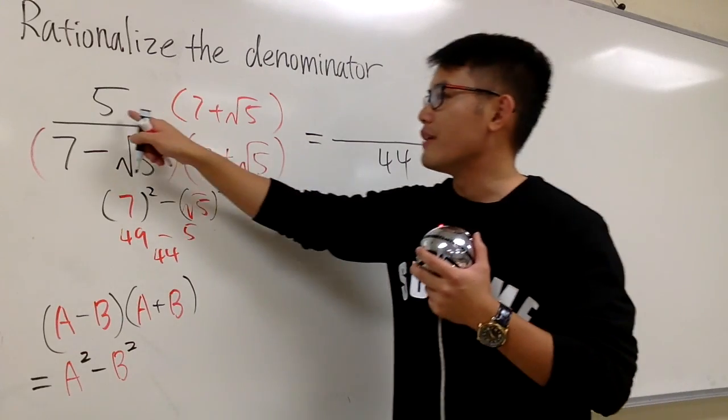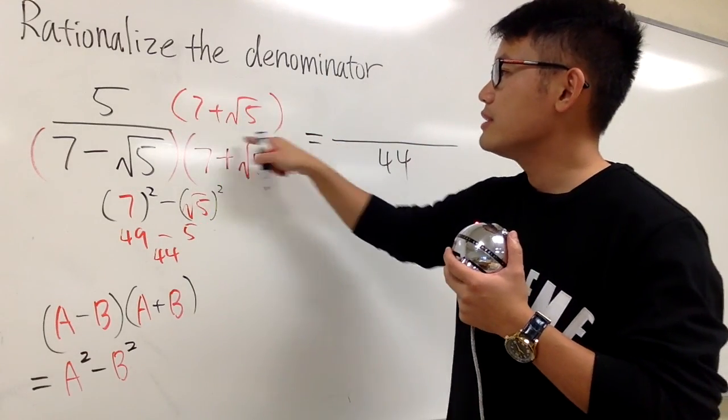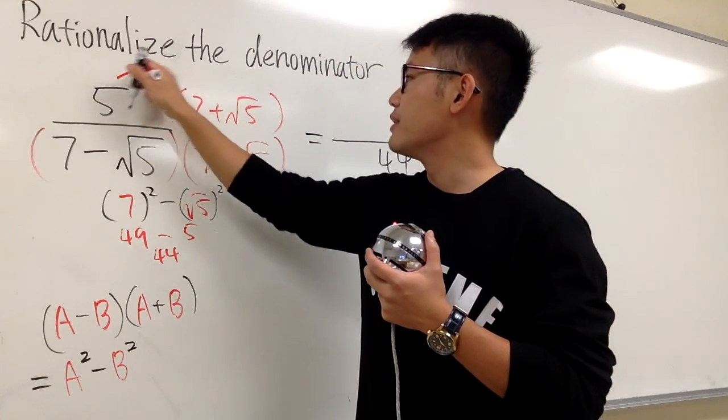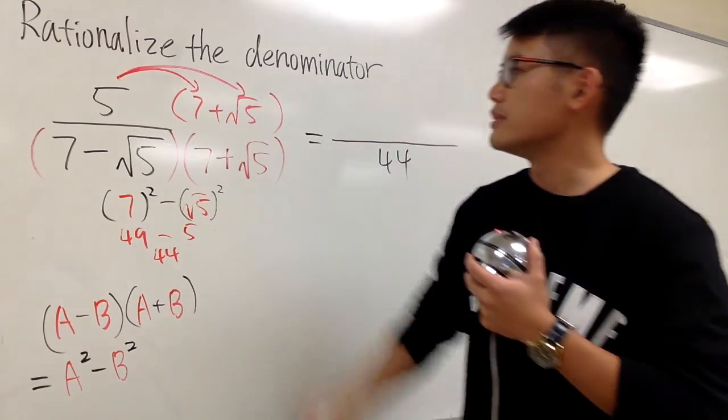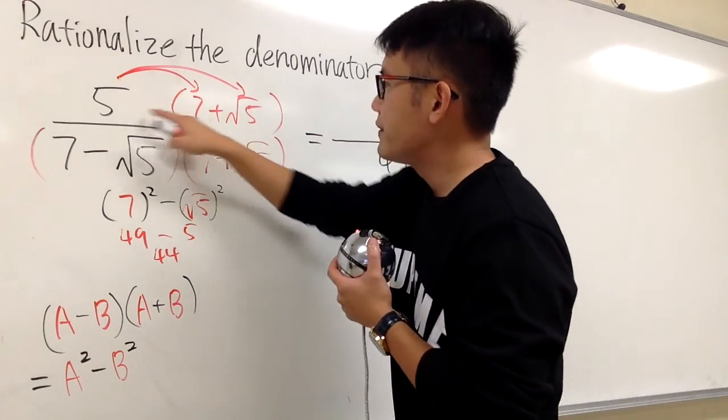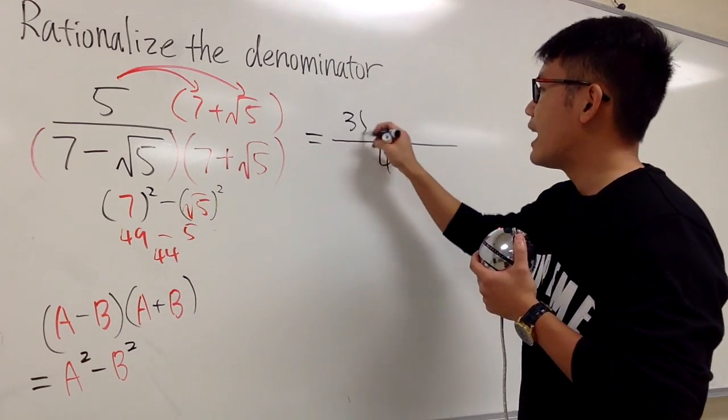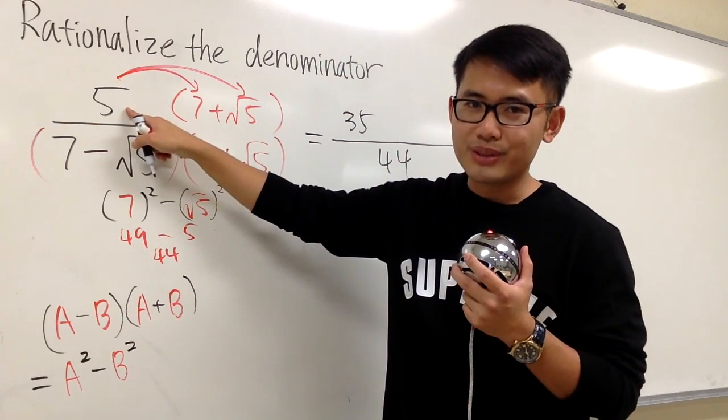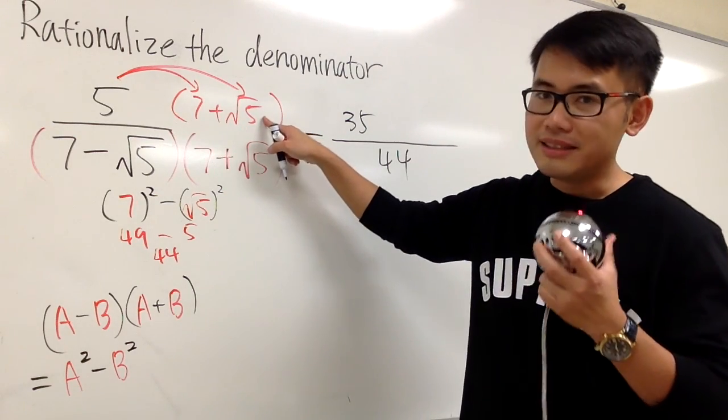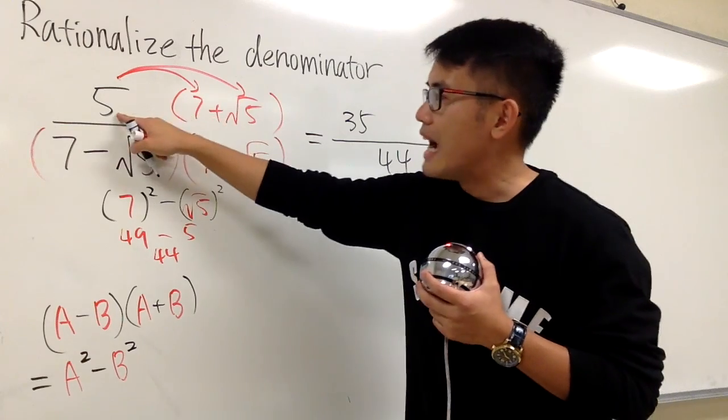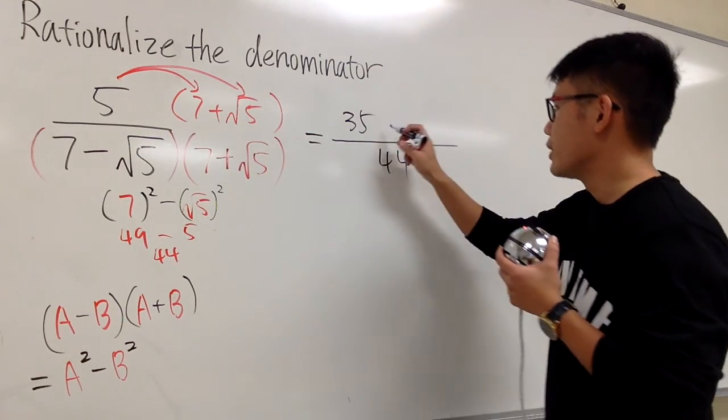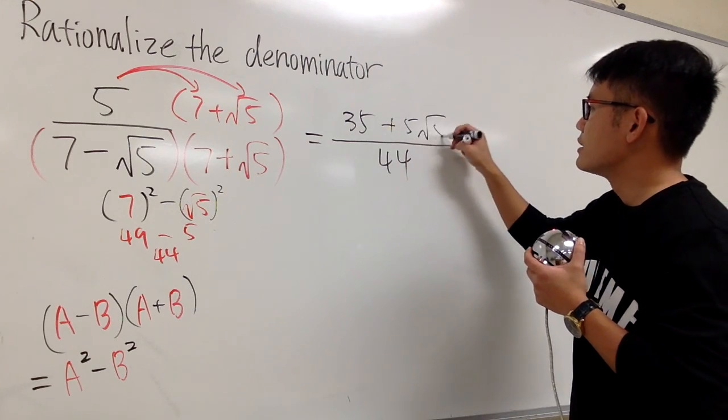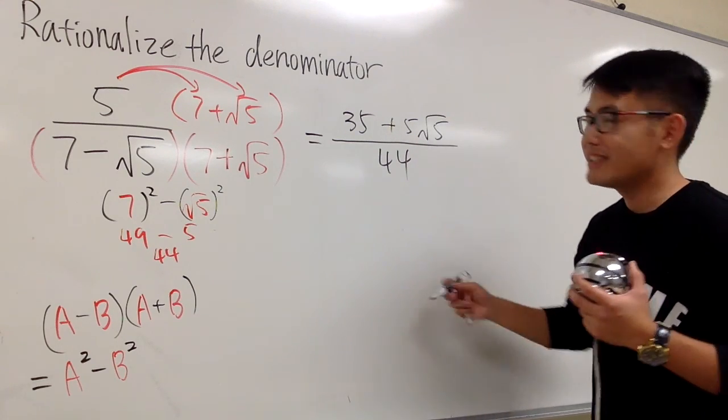And on the top, you see we have 5 in front of this parenthesis, 5 times 7 plus square root of 5. Be sure you take the 5 and distribute into the parenthesis. 5 times 7 gives us 35, and then be careful with this. This 5 does not have a square root. This 5 is inside of the square root. 5 times square root of 5, the only thing we can do is, let's put on a plus first, and then we'll just put them together. 5 times square root of 5. This is it.